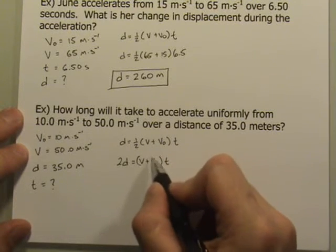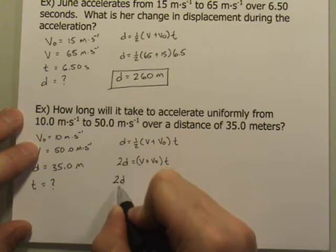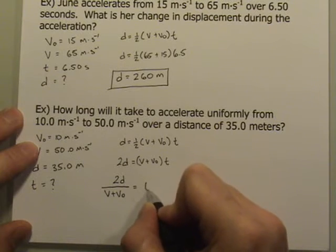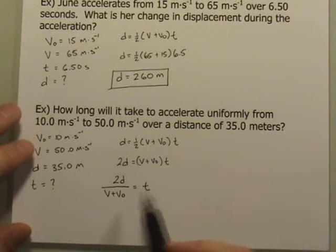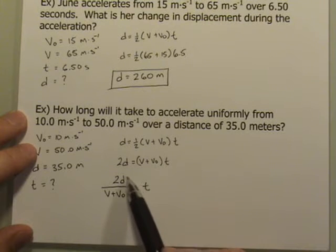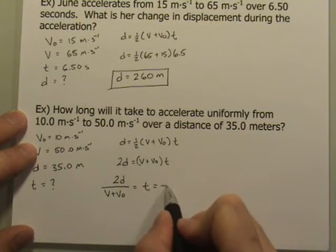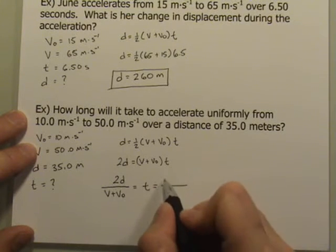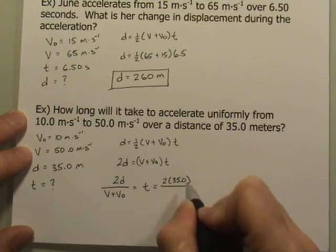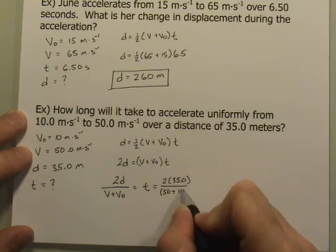So I end up with 2d over v plus v naught equal to t. And the way I like to do it this way is when I've solved for the variable, I've moved all the variables over to the left. So now on the right side, I'm going to rewrite this exact same version of the equation, except I'm going to fill in all the values. So 2 times 35 divided by 50 plus 10.